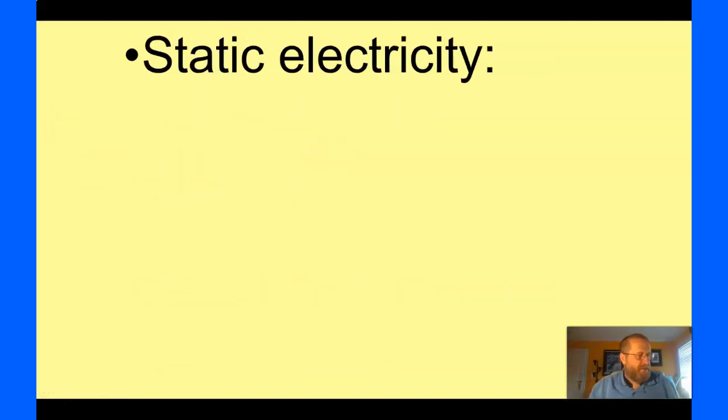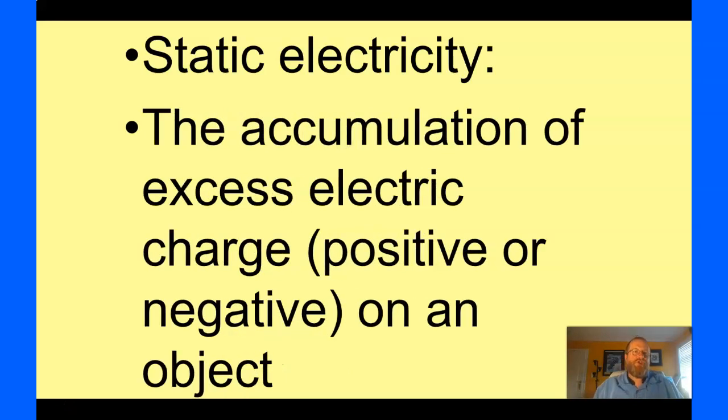Protons don't move, by the way. Just get that in your head. Protons do not move. Now, I can define what static electricity is. If you remember from another lesson we talked about static friction, static is the word that means not moving. So, static electricity is the accumulation of excess charge on an object. It doesn't go anywhere. It accumulates on one thing. It stays there.